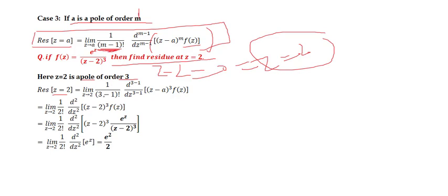Residue at z = 2 = limit as z→2 of 1/(m−1)! · d^(m−1)/dz^(m−1) of [(z−2)^m · f(z)], with m = 3: limit as z→2 of 1/2! · d²/dz² of [(z−2)³ · e^z/(z−2)³]. The (z−2)³ terms cancel, leaving d²/dz² of e^z = e^z. Evaluating at z = 2 gives e², divided by 2! = 2, so the residue equals e²/2.